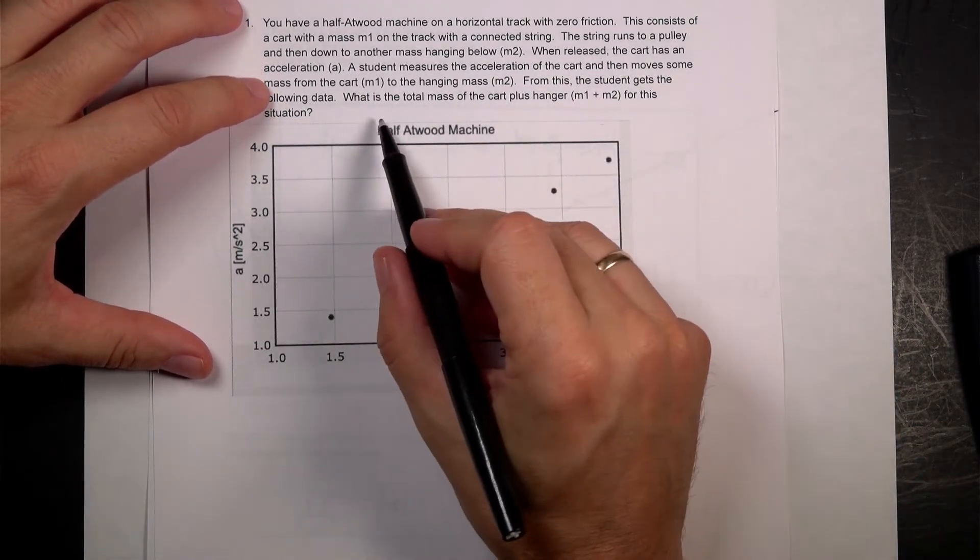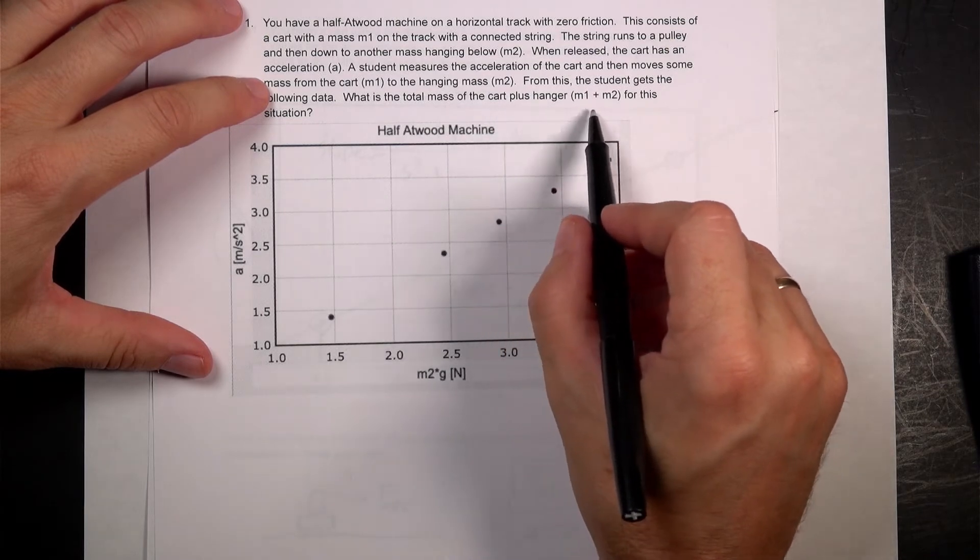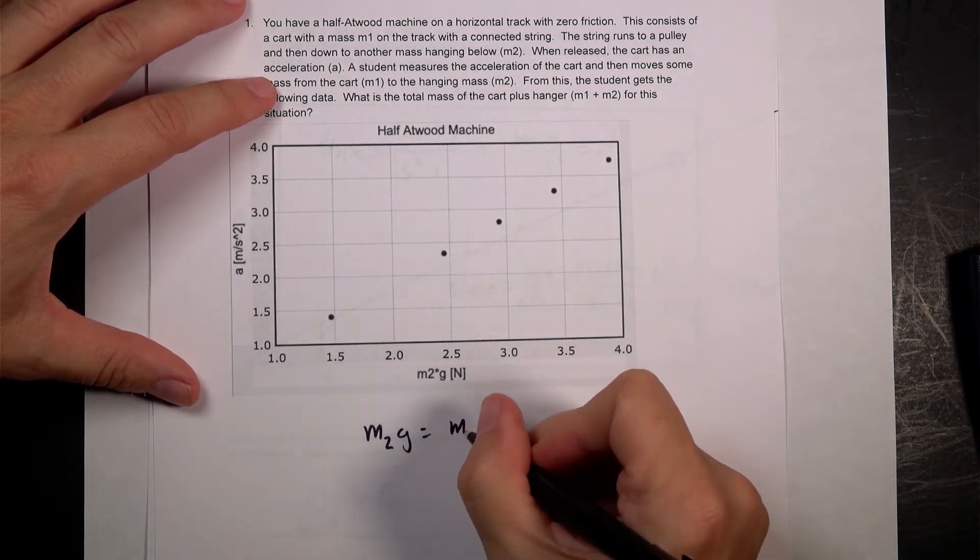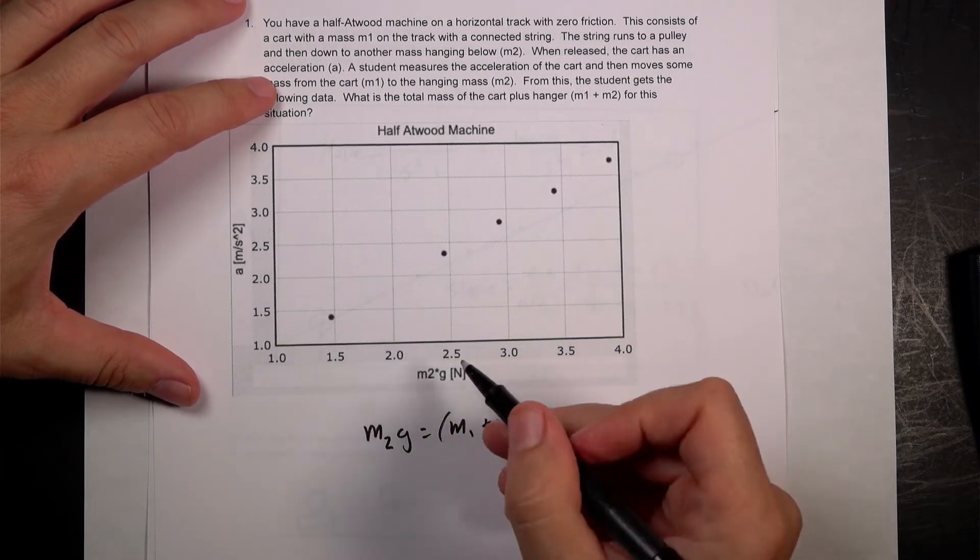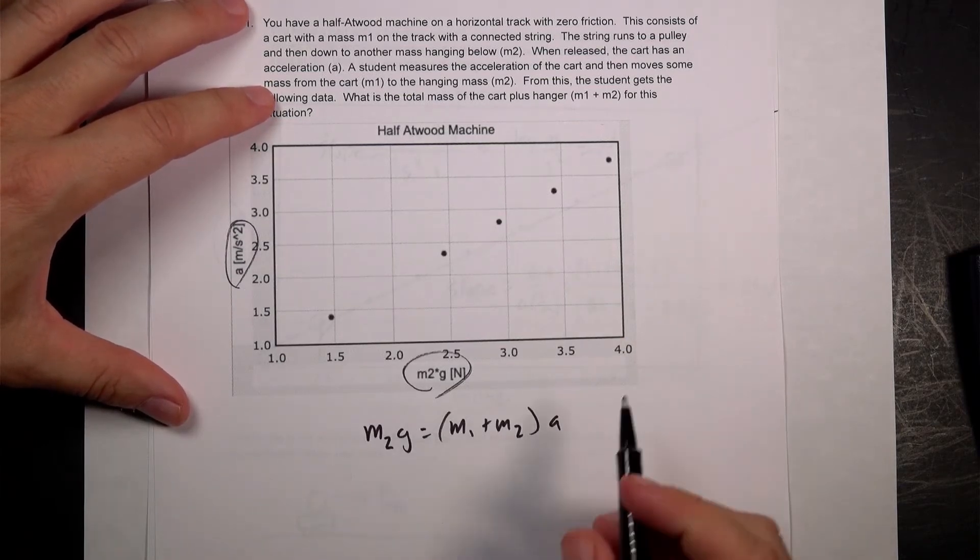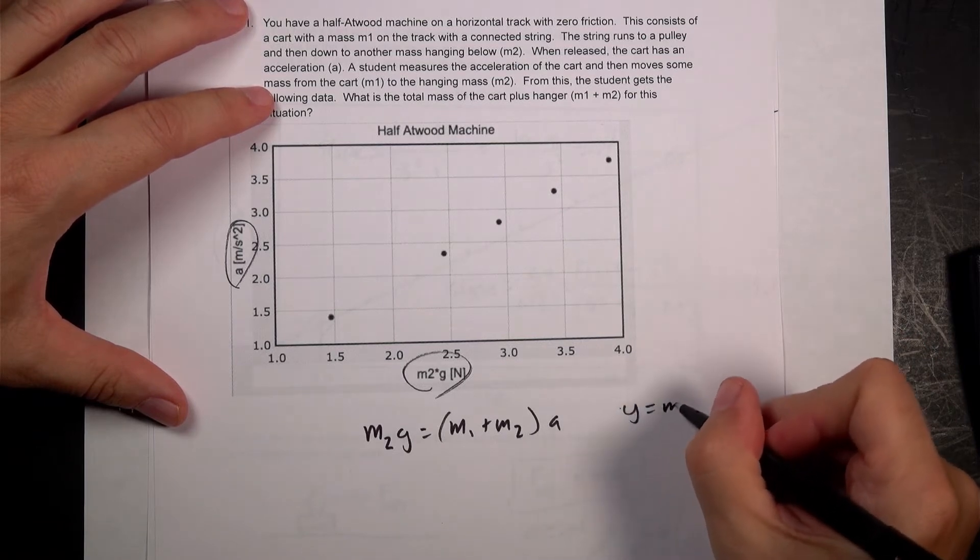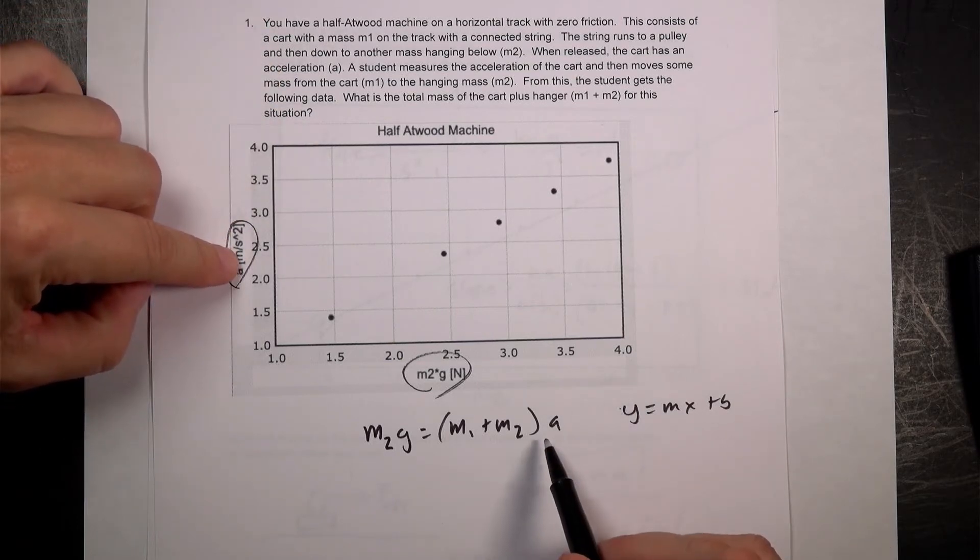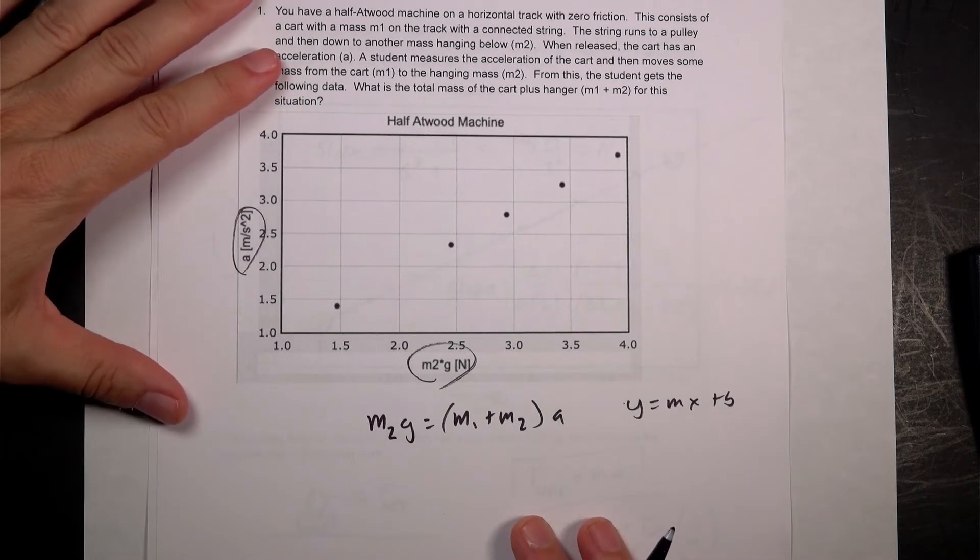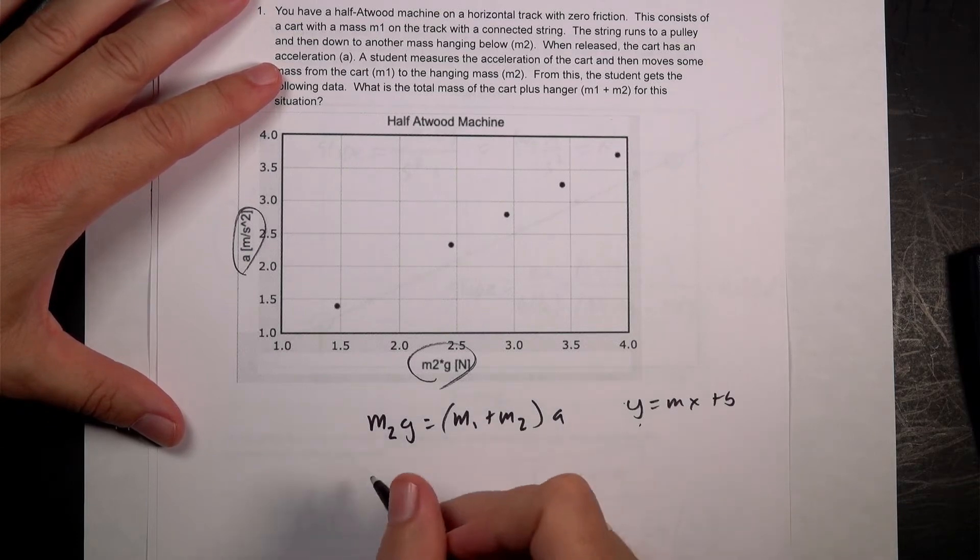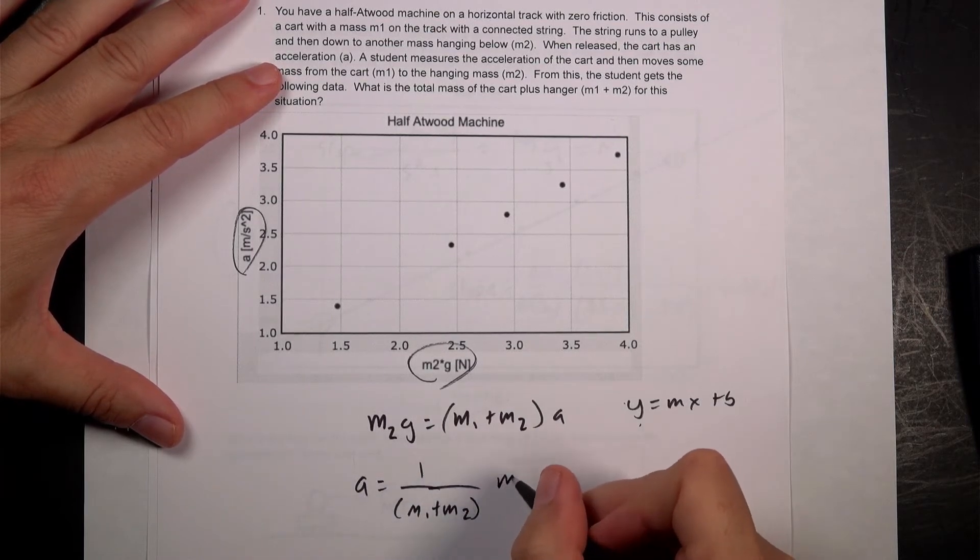The question says, what is the total mass of the cart plus hanger M1 plus M2 in this situation? So let me put down my equation. I had M2G equals M1 plus M2A. And so here I'm plotting M2G on the horizontal axis. And this is A on the vertical axis. And so I want it in the form of Y equals MX plus B. So I can solve this for A. So if I divide both sides by M1 plus M2, I get A equals 1 over M1 plus M2 times M2G.